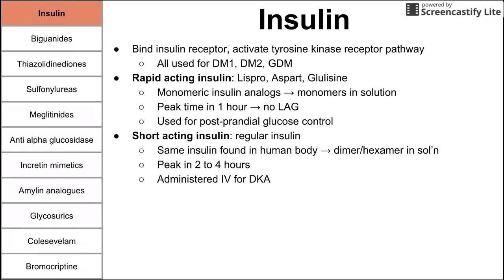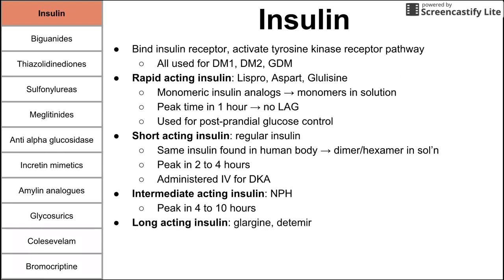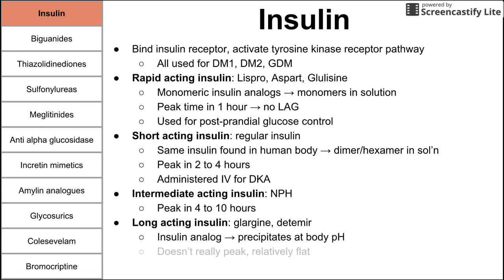Regular insulin is administered intravenously for patients who come in with diabetic ketoacidosis. Next is intermediate-acting insulin, called NPH. It peaks in four to ten hours. Long-acting insulins are glargine and detemir, which don't really peak at all — they can even precipitate at body pH, so some may not be in solution. They produce a relatively flat profile, which makes them good for mimicking basal glucose levels normally secreted by the pancreas. People with type 1 diabetes may be given a long-acting insulin to maintain that basal insulin release.